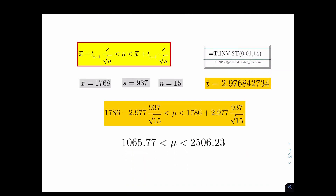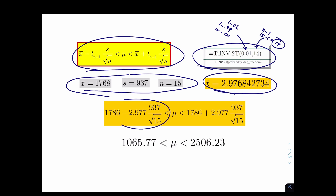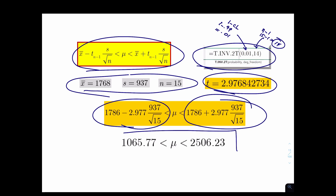I've written it out for you here. You identify the formula, write down the givens, find 0.01 from one minus 0.99, and 14 from n minus one (15 minus 1). You plug them in, compute the left-hand side and right-hand side. The answer means: I'm 99% confident that the repair cost of all collisions for Honda Odysseys is anywhere from $1,000 to $2,500. That's how you construct the confidence interval for a population mean when sigma is unknown and S is given.